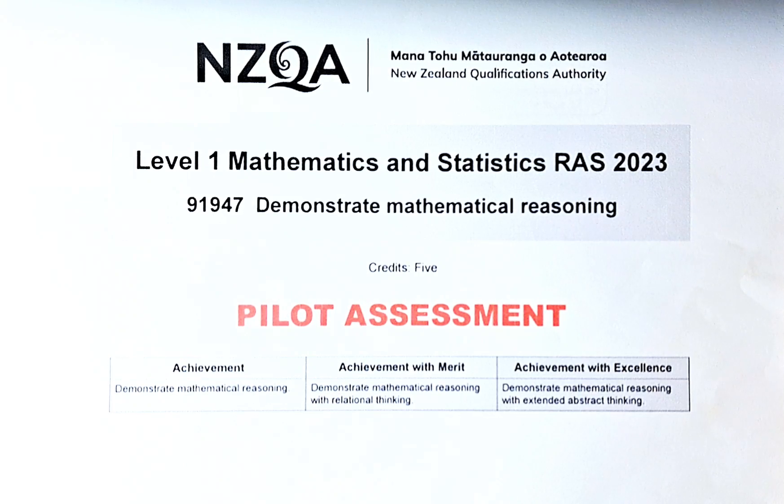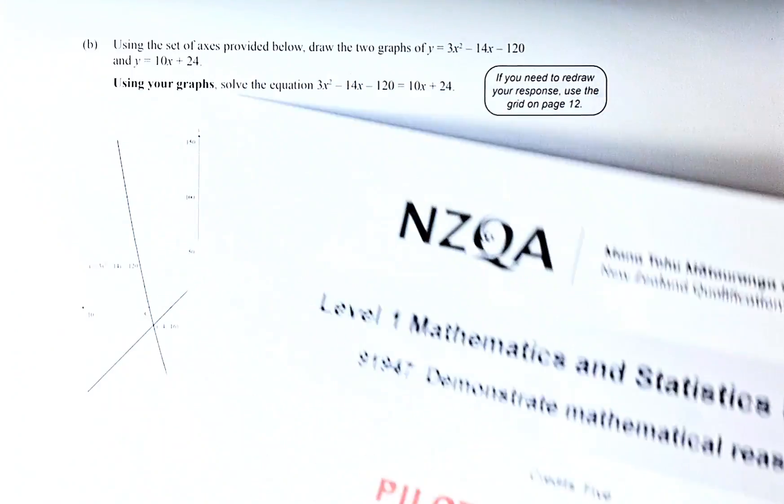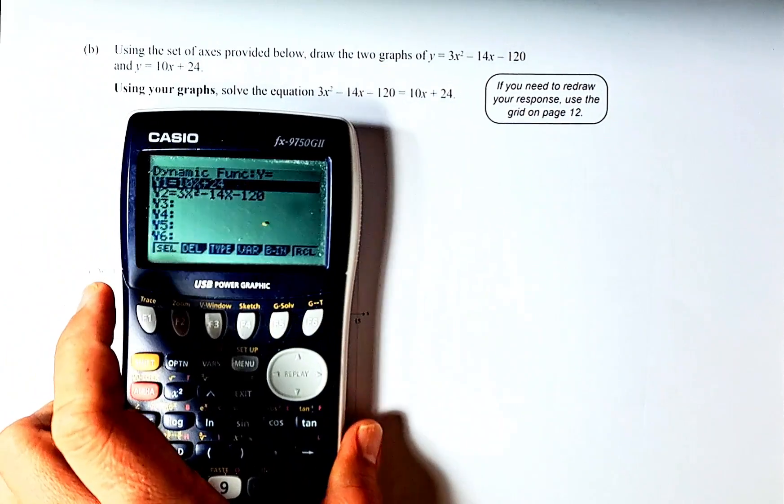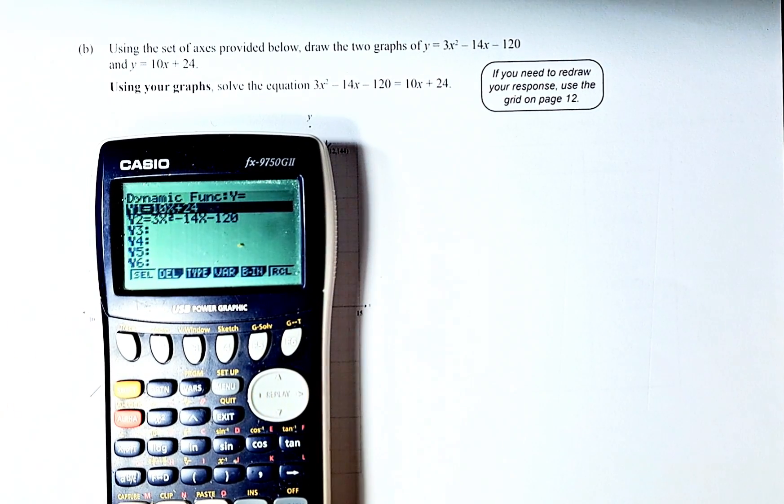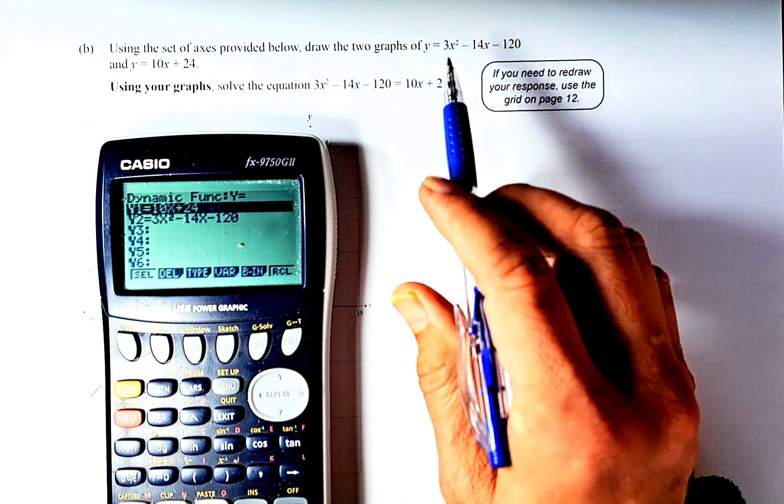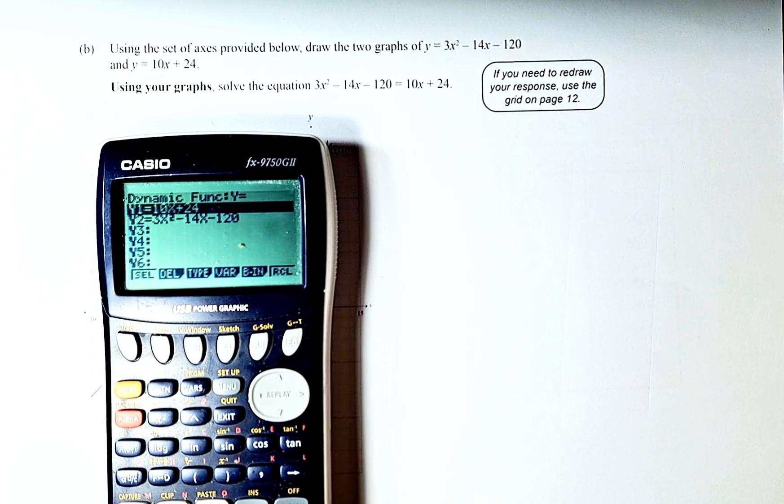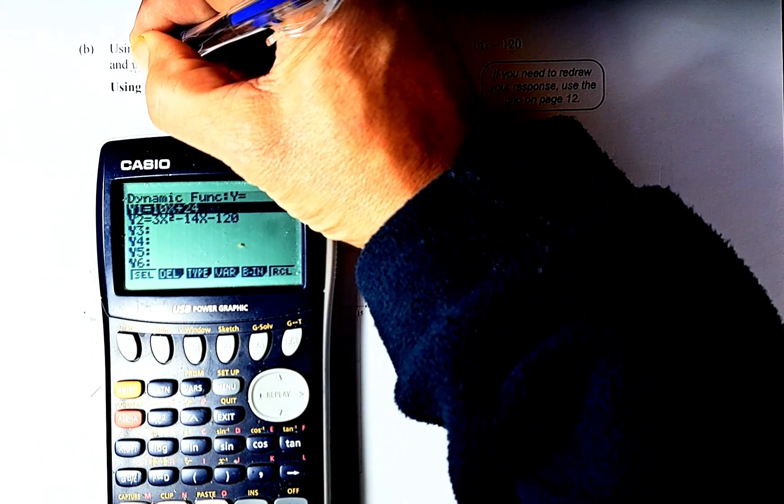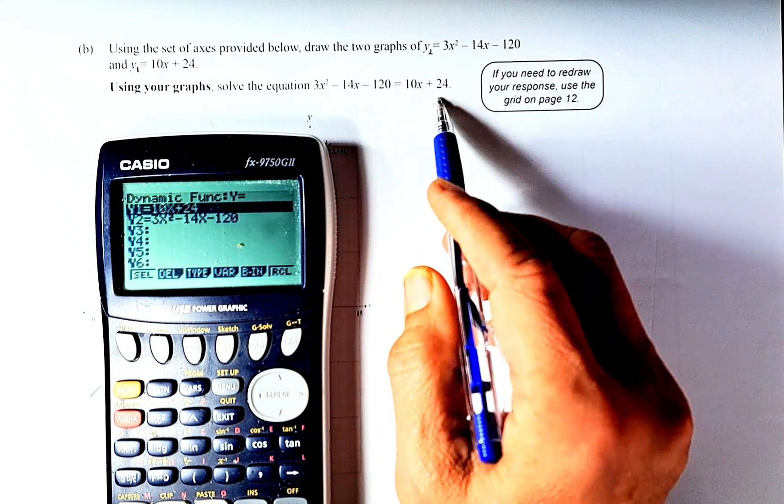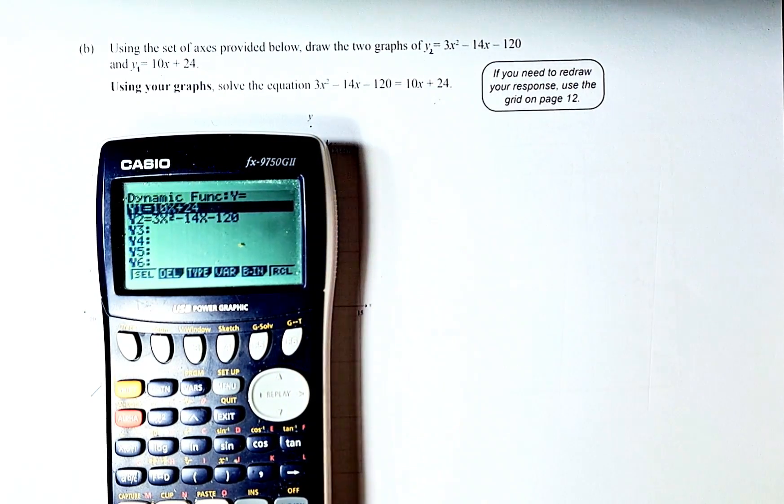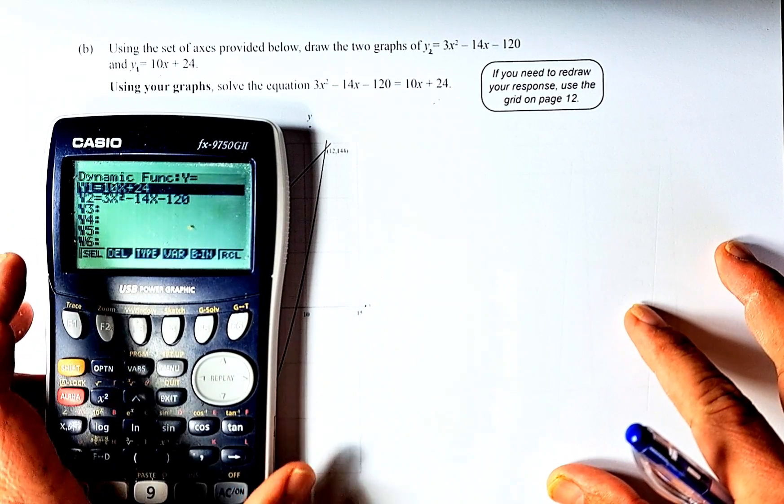Let's do question 3b, and it's going to be quite complex, so listen carefully. We're going to draw the graphs. Using the set of x values provided below, draw the graphs y = 10x + 24 and y = 3x² - 14x - 120. We'll let the first be y₁ and the second be y₂. Use your graph to solve the equation. The solution will be the point of intersection of the two graphs.